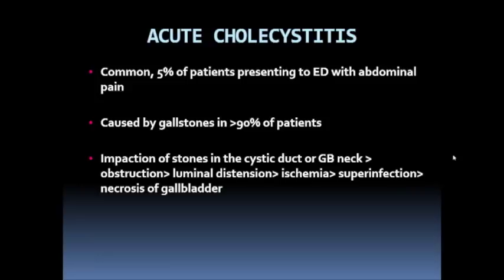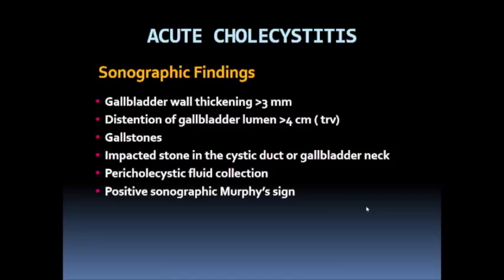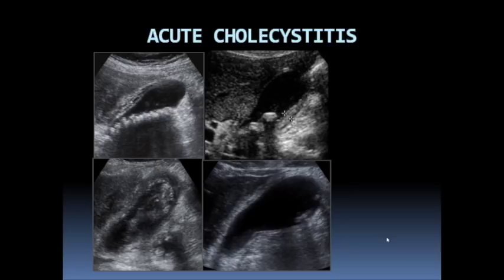Acute cholecystitis is common, seen in 5% of patients presenting to the ER with abdominal pain. It's caused by gallstones in greater than 90% of patients, with impaction of stones in the cystic duct or gallbladder neck as the primary cause. The stone impaction obstructs the neck, causing the gallbladder lumen to distend, leading to ischemia, secondary superinfection, and ultimately necrosis. On ultrasound, we see a thickened gallbladder wall, distended lumen, stones, an impacted stone in the neck or cystic duct, pericholecystic fluid, and a positive sonographic Murphy sign.